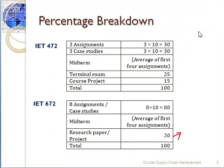In IET 472, our undergraduate course, we will have three assignments each worth 10 points, covering 30 points total, and three case studies each worth 10 points, covering another 30 points. The midterm will be the average of the first two assignments and two case studies. The final exam covers 25 points and there will be a course project. Students are encouraged to use, extend, or analyze topics from our lectures for their course project, and the project cannot simply reproduce ideas directly from books or journals.